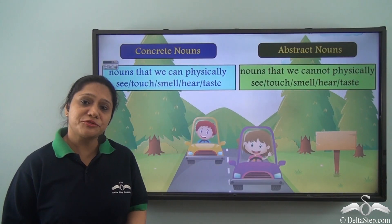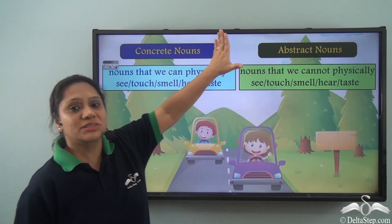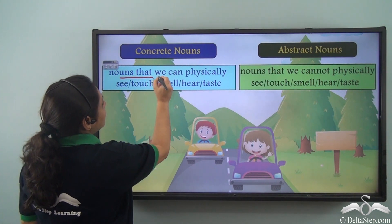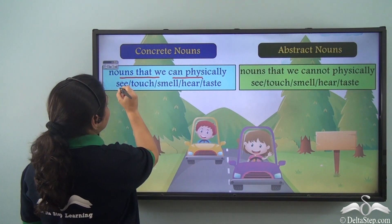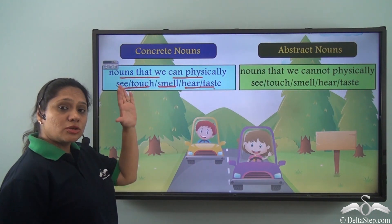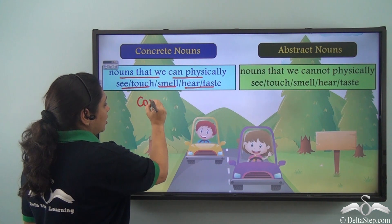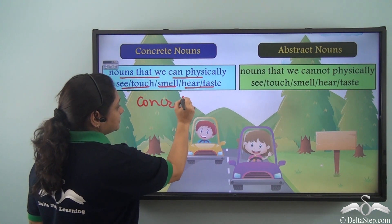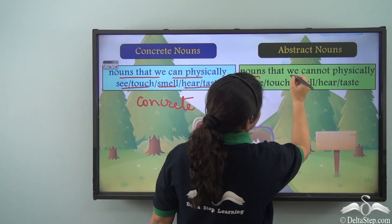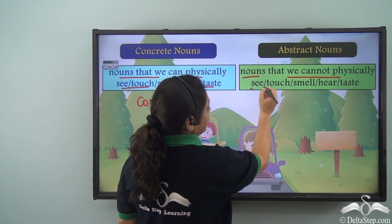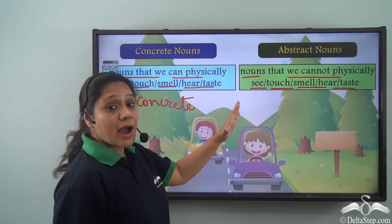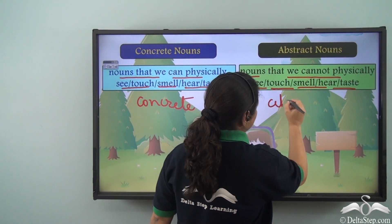So what is the difference between concrete nouns and abstract nouns? Concrete nouns are nouns that we can physically see, touch, smell, hear or taste — so they are names of concrete things. Whereas abstract nouns are nouns that we cannot physically see, touch, smell, hear or taste — so they are names of abstract things.